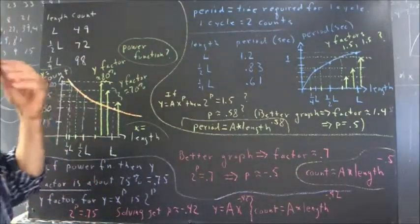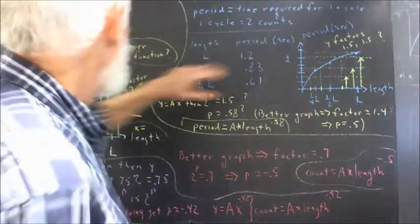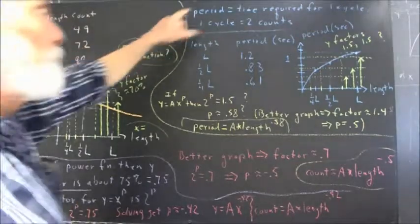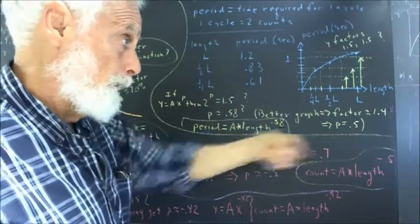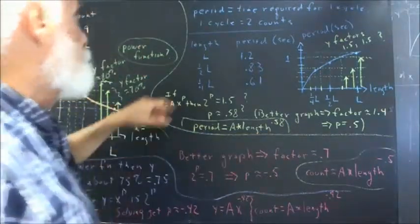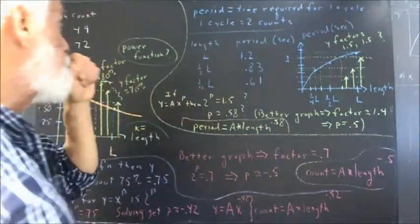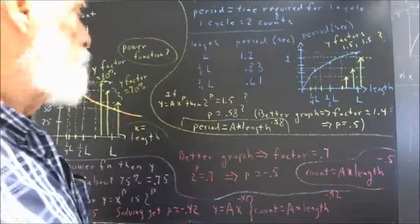We then calculated the period corresponding to each count, period being the time required for a cycle, a cycle being two counts, cycles from here, over, and back. We got these results. And this is easily calculated.